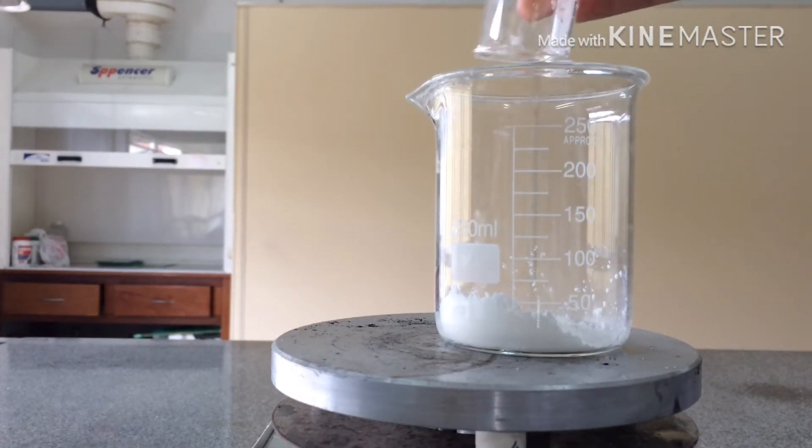Into a beaker you will add 20 grams of potato starch. I'll leave a link in the video on how to extract it.